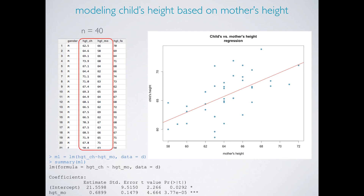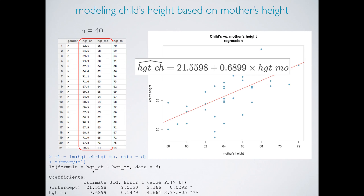We can fit this model using R, using the LM function that stands for linear model. Using the coefficient estimates provided by R, we can obtain the linear model. The intercept is roughly 22 inches and the slope of the relationship is roughly 0.7 inches, meaning that for each additional inch in mother's height, we would expect the child's height to increase on average by roughly 0.7 inches.